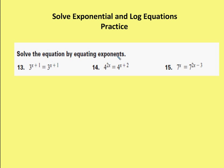Solve the equation by equating exponents. I have the same base here, so I can equate the exponents: x plus 1 is equal to x plus 1. What ends up happening is x can be any value, since the two exponents are the same — x can be any value. So there's no solution to this. If I subtract 1 from both sides, I get x is equal to x.